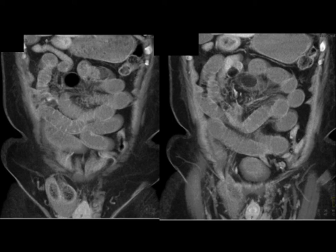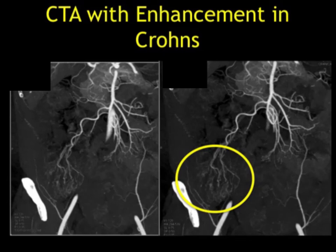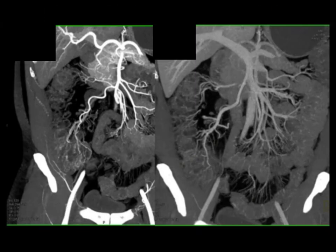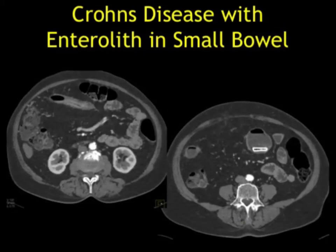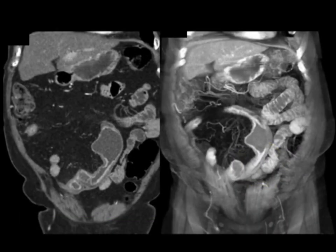Crohn's disease is a very common process and one of the typical presentations is obstruction. You can also get abscess and fistula, but obstruction is one of the most common. Things we see with Crohn's include mucosal hyperenhancement, wall thickening, mural stratification, multiple bowel layers, prominent vasa recta — the so-called comb sign — and mesenteric fat stranding. CT with dual energy is ideal for Crohn's patients. Here we see the prominent vasa recta going to the patient's right colon and distal small bowel, an enterolith present in the bowel, and very nicely a transition point in the small bowel — classic zone of narrowing with partial obstruction developing and an enterolith above that zone, shown nicely in coronals and 3D imaging.